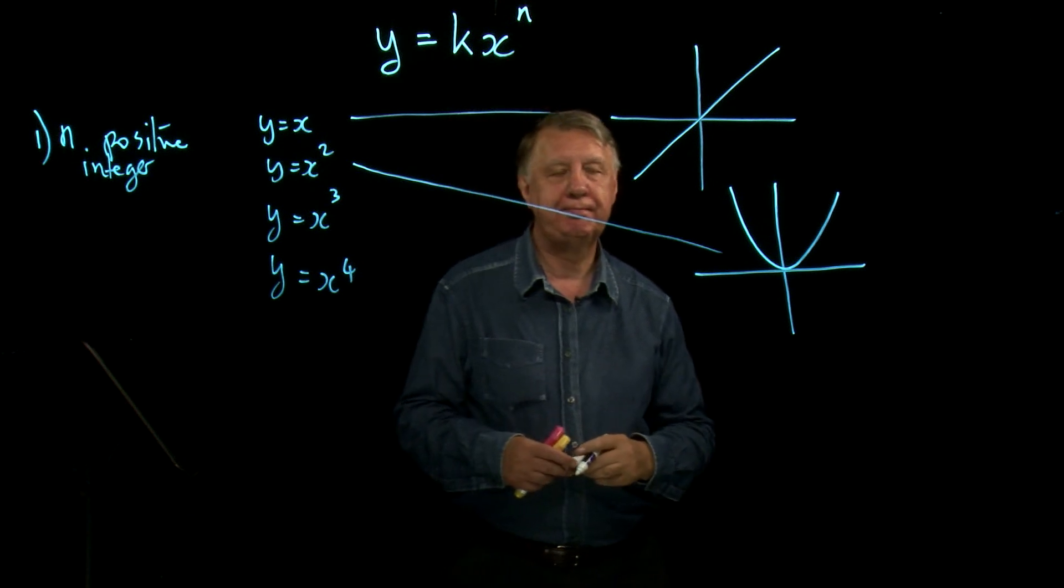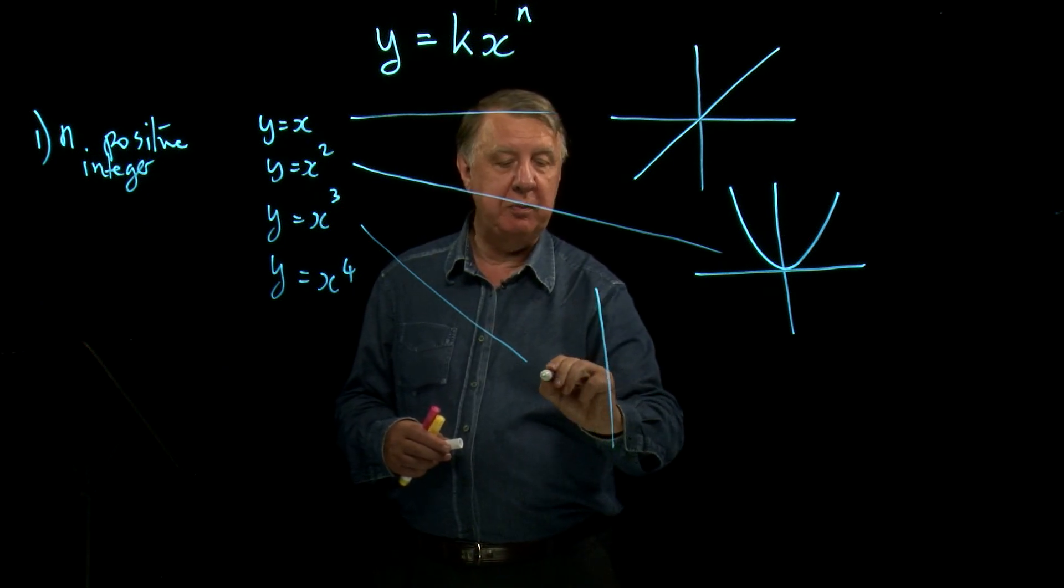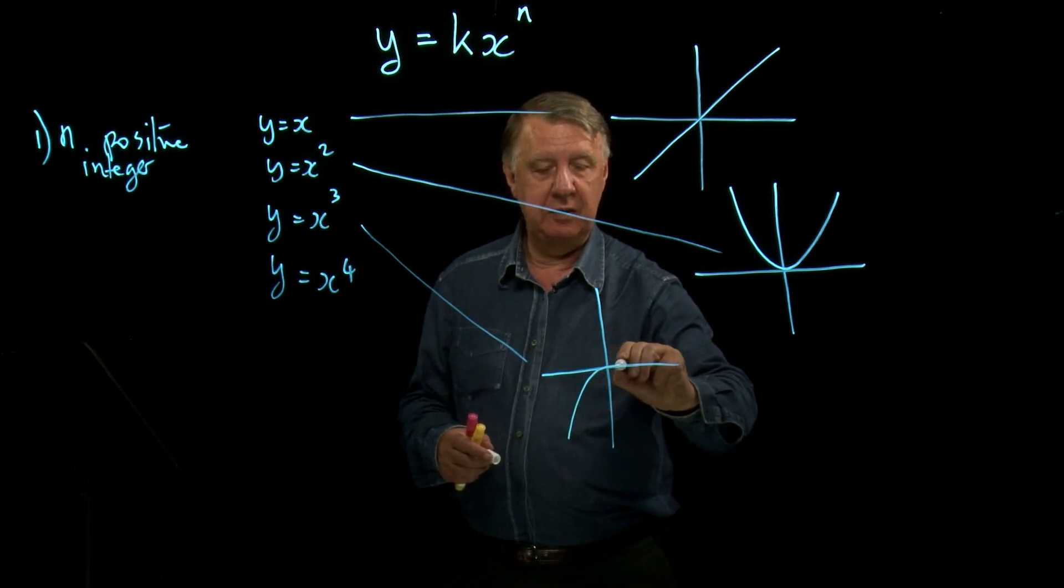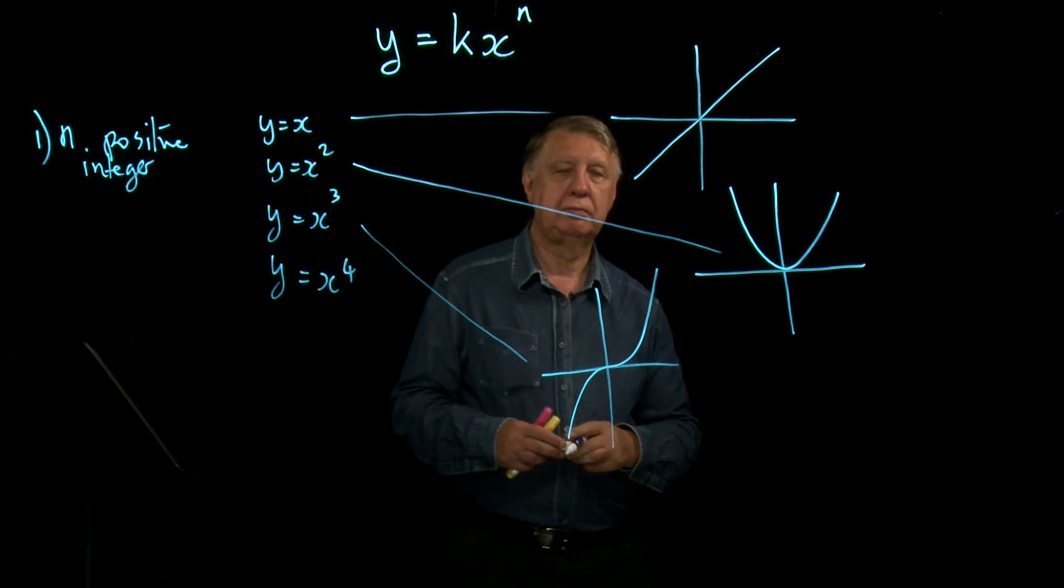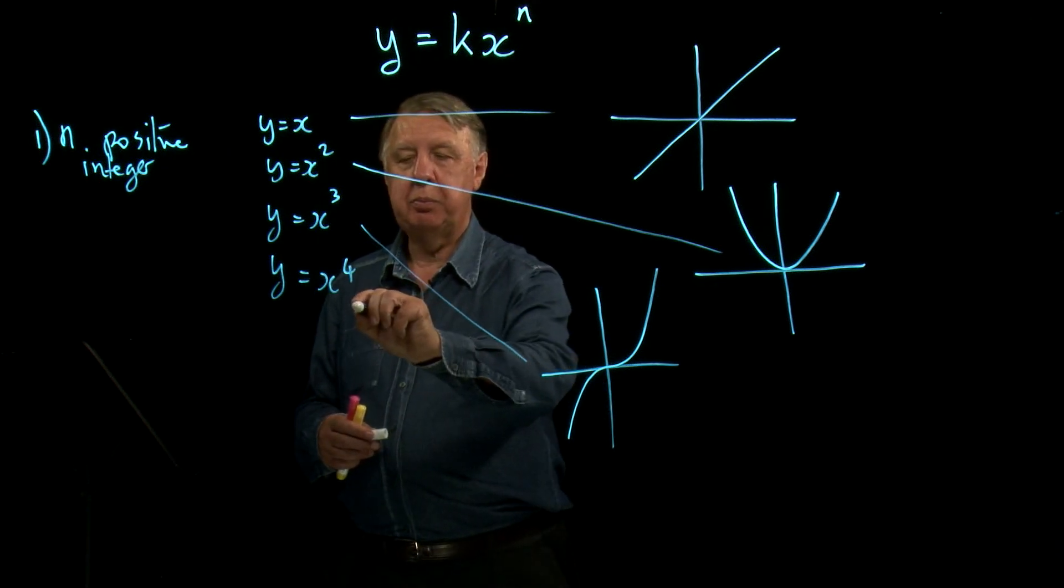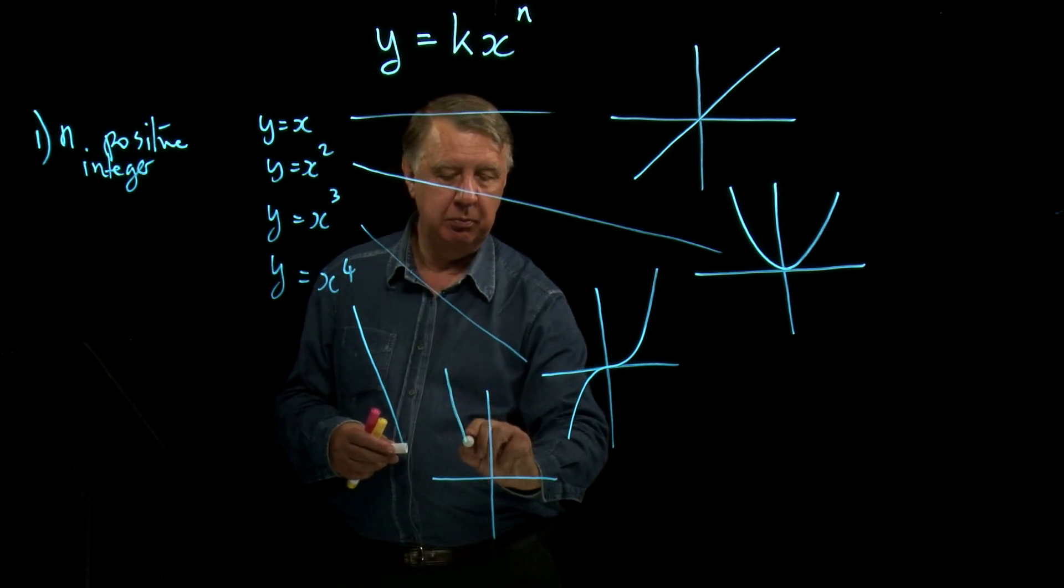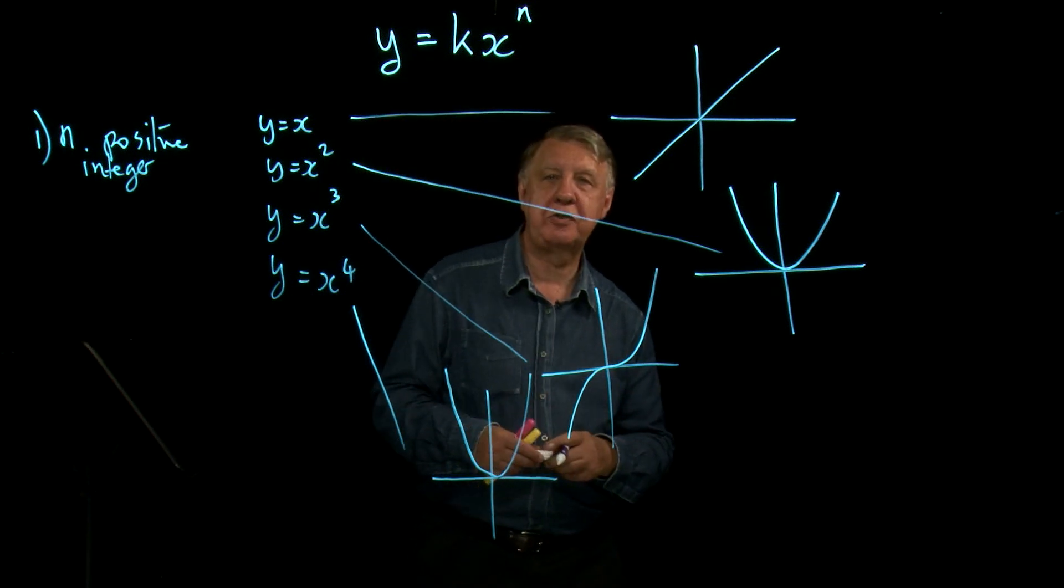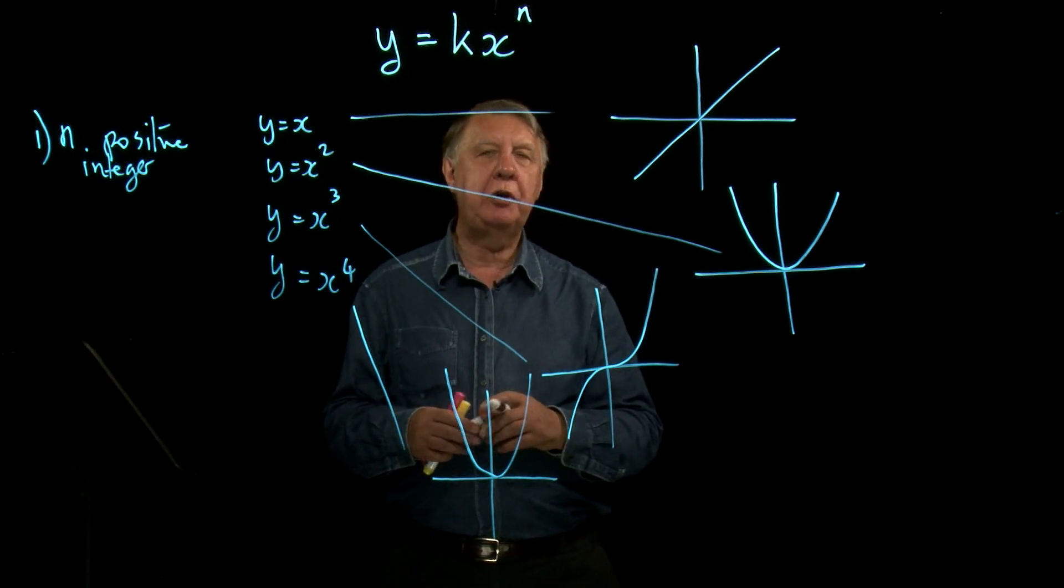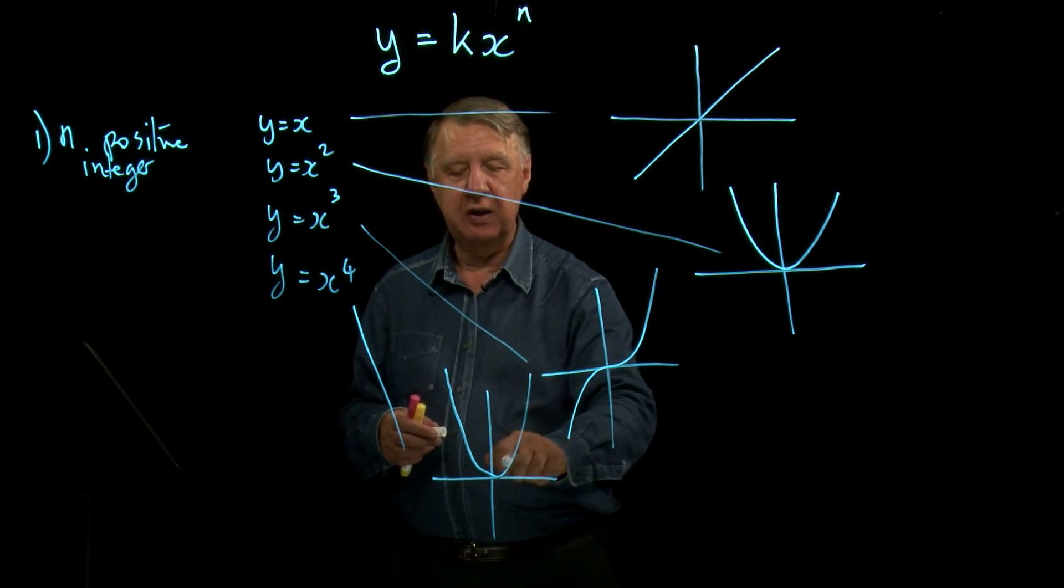X cubed again should be pretty well known to you. It's a sort of shape like that. X to the fourth you won't have met so often, but all that happens is that it's similar to x squared but much steeper. One of the problems with sketching is that it's often not possible to convey the true shape of the graph. I mean this x to the fourth graph goes up very, very steeply.